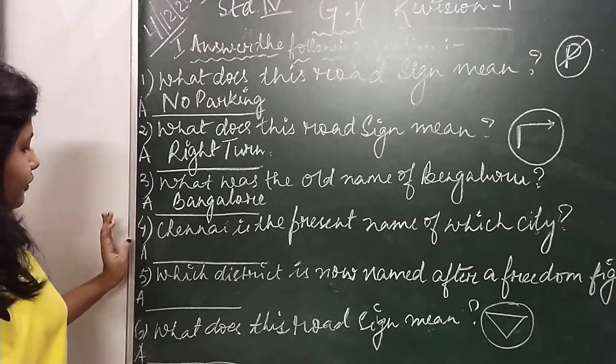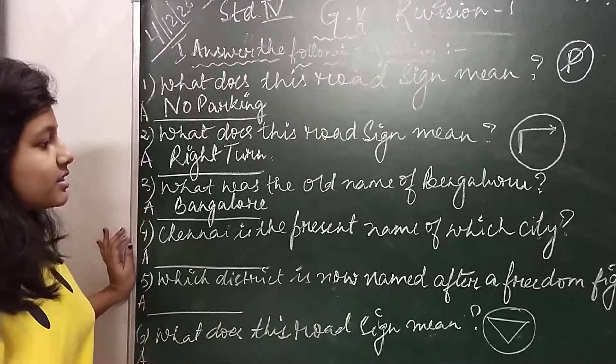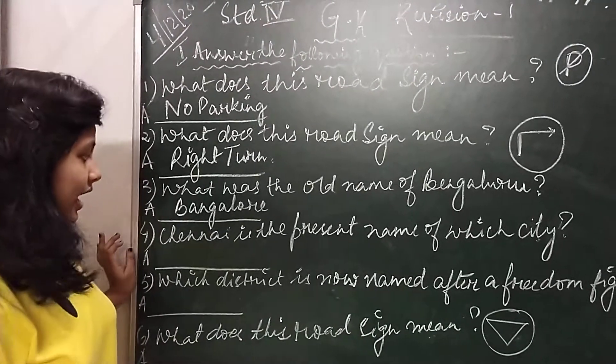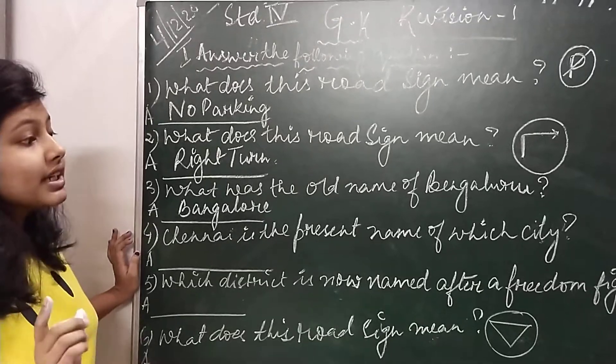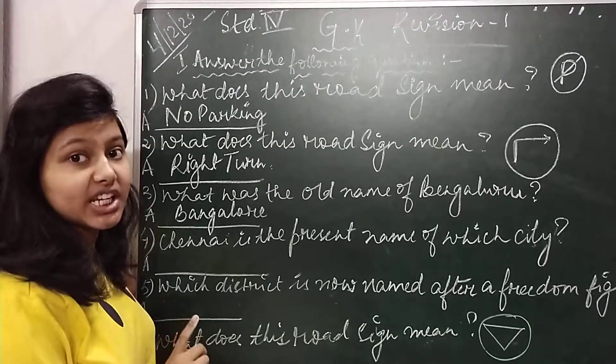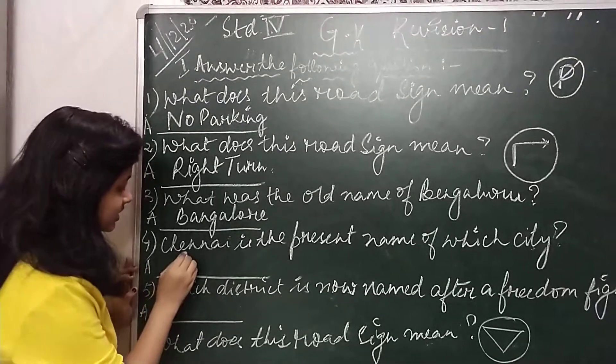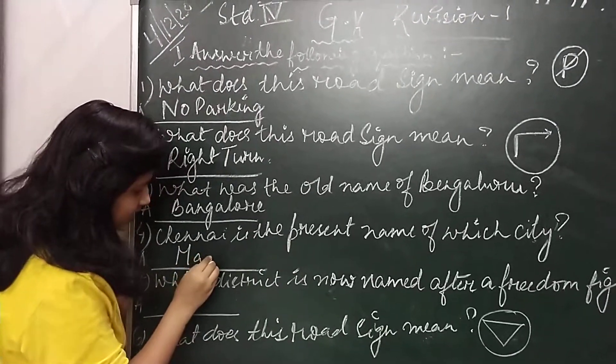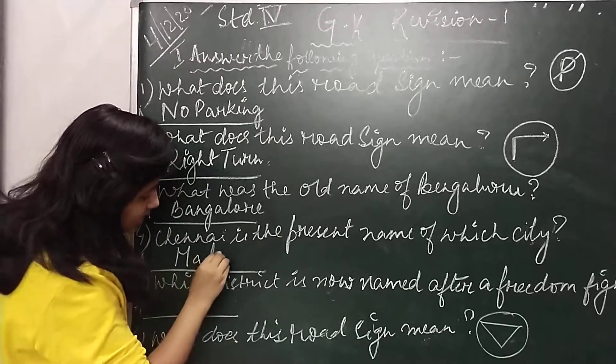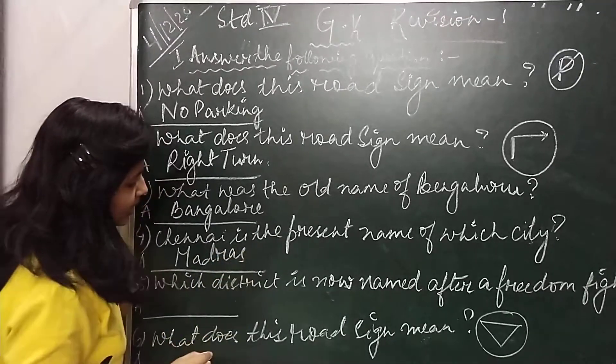Children, the fourth question is, Chennai is the present name of which city? So children, the old name of Bengaluru is Madras.